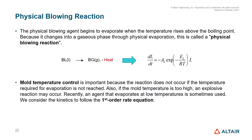In the case of the physical blowing agent, it begins to evaporate when the temperature rises above the boiling point, changing into a gaseous phase through physical evaporation. This is known as the physical blowing reaction. Mold temperature control is very important here, because the reaction does not occur until the evaporation temperature is reached. If the mold temperature is too high, an explosion reaction can occur, similar to what we saw in the rooftop experiment video. Therefore, an agent that evaporates at low temperatures is sometimes used, and we consider the kinetics to follow the first-order reaction.